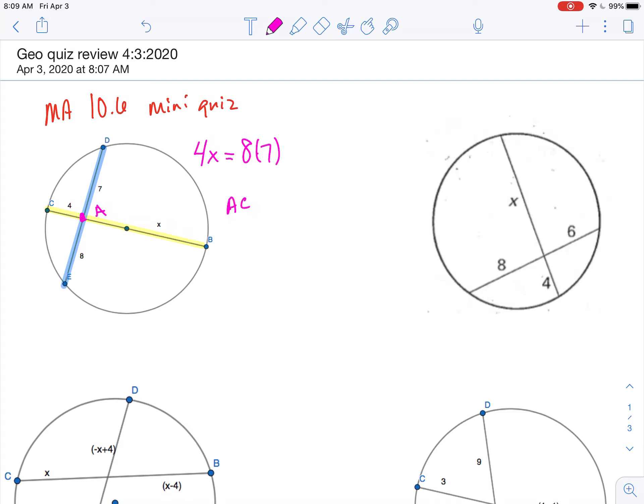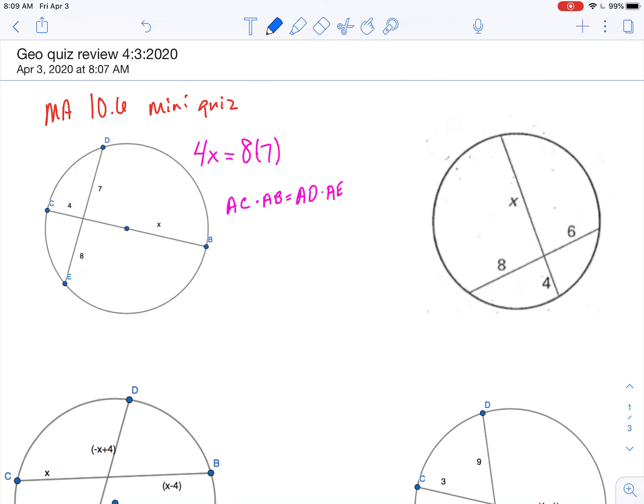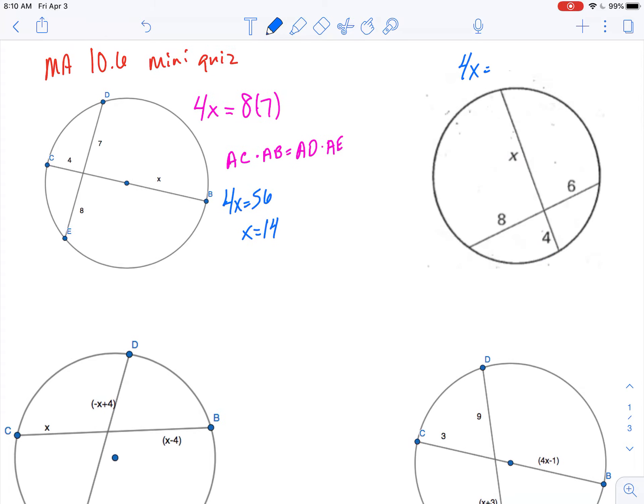Or we could think of this as, you know, if this is point A, so AC times AB, so AC times AB equals AD times AE. And anyway, that would give us 4x equals 56, or x equals 14.